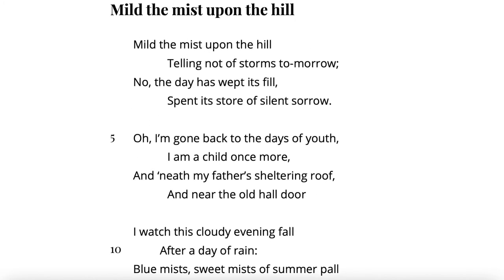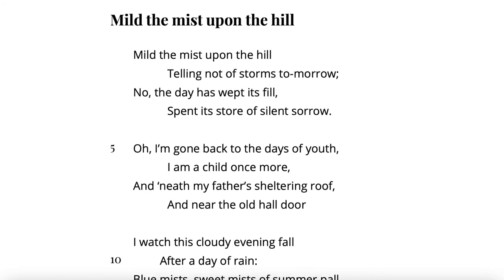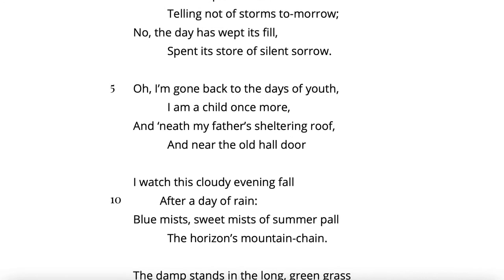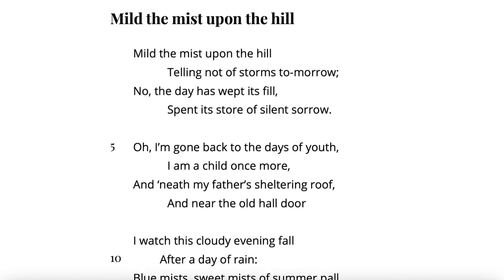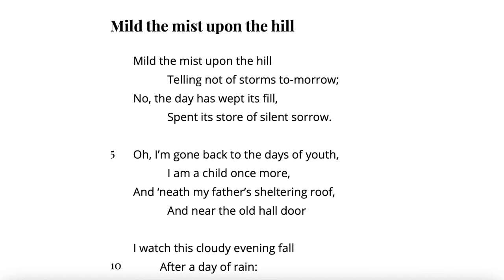This poem is essentially illustrating the narrator looking at a mist as it clears from the hill, reflecting on the clouds and sorrow passing, and thinking about how they used to feel as a child. We have this sense of melancholy mixed in with nostalgia. Let's now analyse this poem in detail.